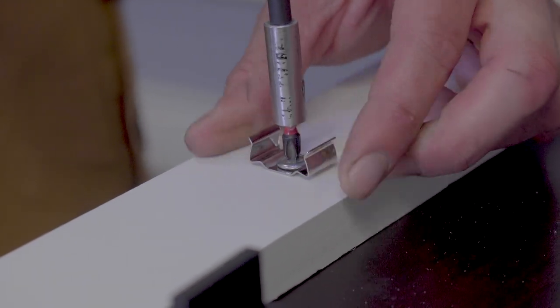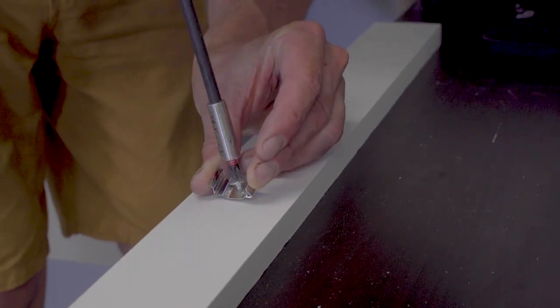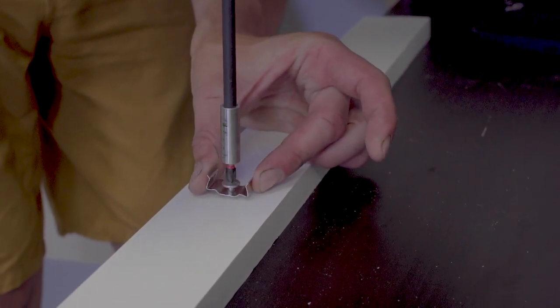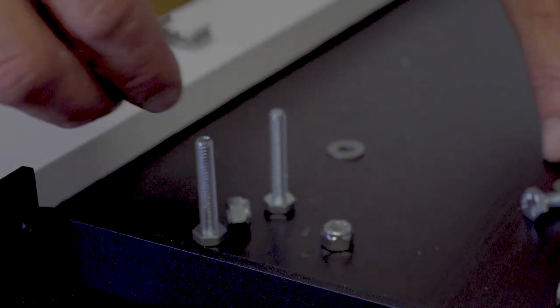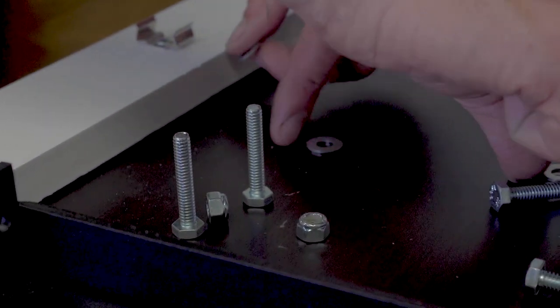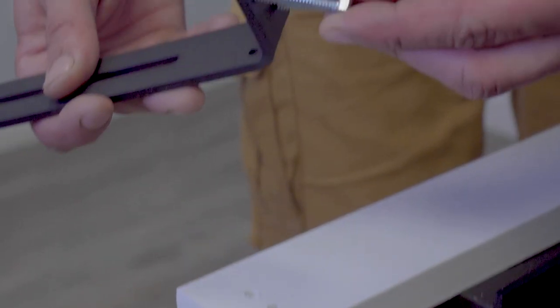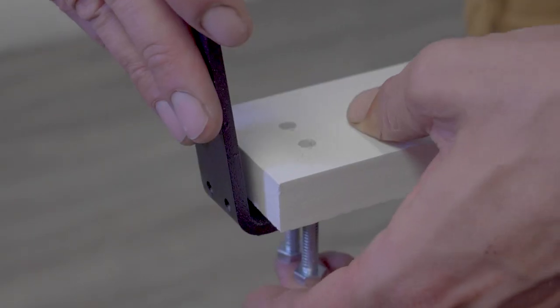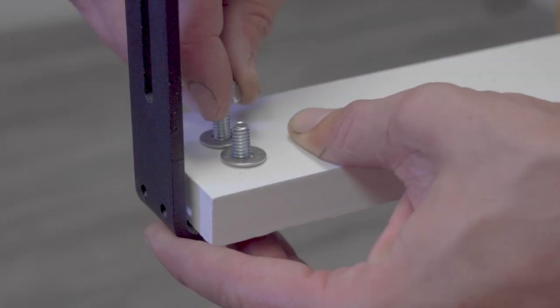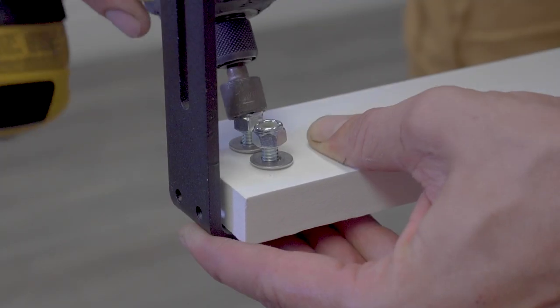You want to use the pan head screws along with the brackets that come in the light boxes to mount them securely onto the valances. Once you've got the light brackets mounted on the valances, then you can go ahead and use the bolts and nuts and washers to attach the valance to the light bracket itself.